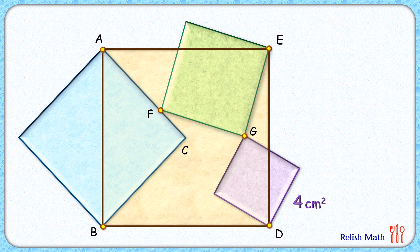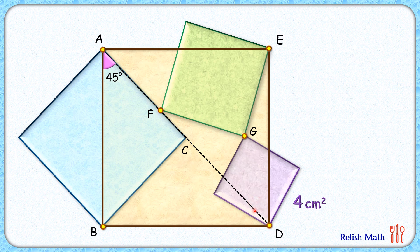Let's start with this blue square, where AB is the diagonal and AC is the side length. In a square, the angle between the side and diagonal is 45 degrees. For this brown square, AB is the side length, and if we draw a line segment at a 45 degree angle it will form the diagonal. Thus AC when extended will pass through point D, and this angle will again be 45 degrees.